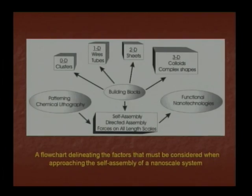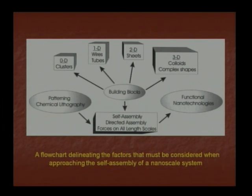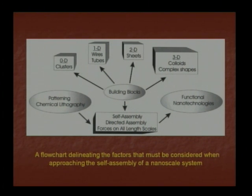These are important parameters in materials. We can observe zero dimension, one dimension, two dimensional and three dimensional. Zero dimensional: clusters. One dimensional: wires, tubes. Two dimensional: sheets — single wall or multi-wall sheets. Three dimensional: colloids, complex shapes.